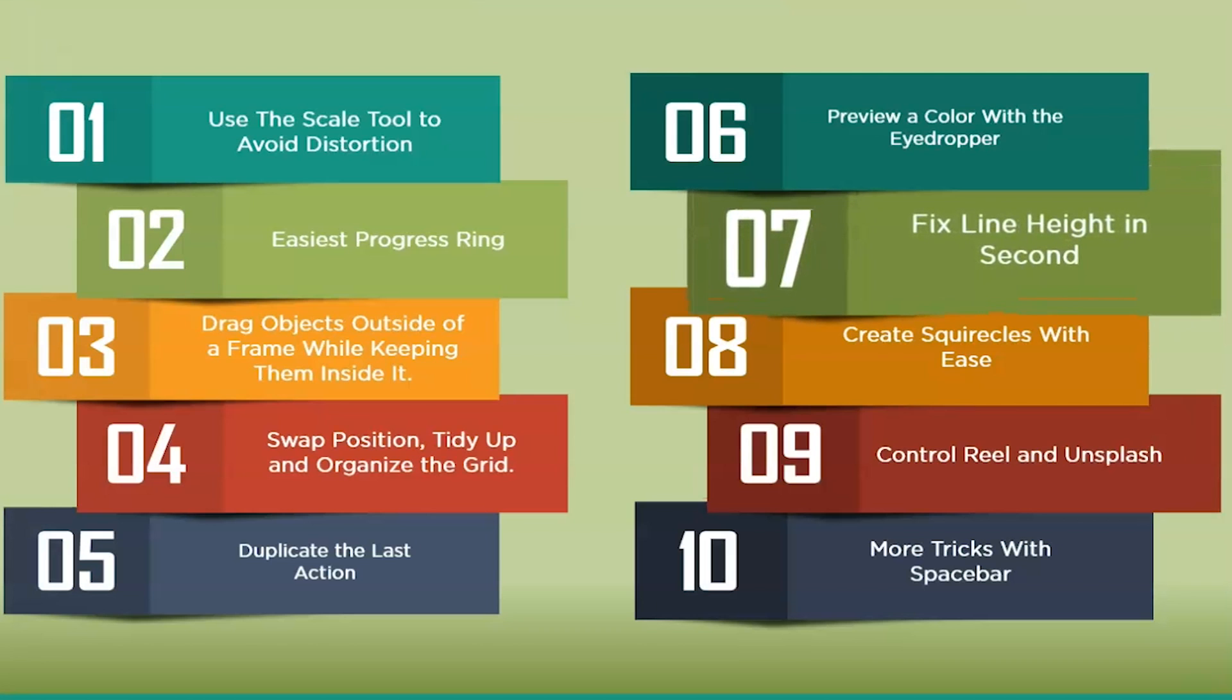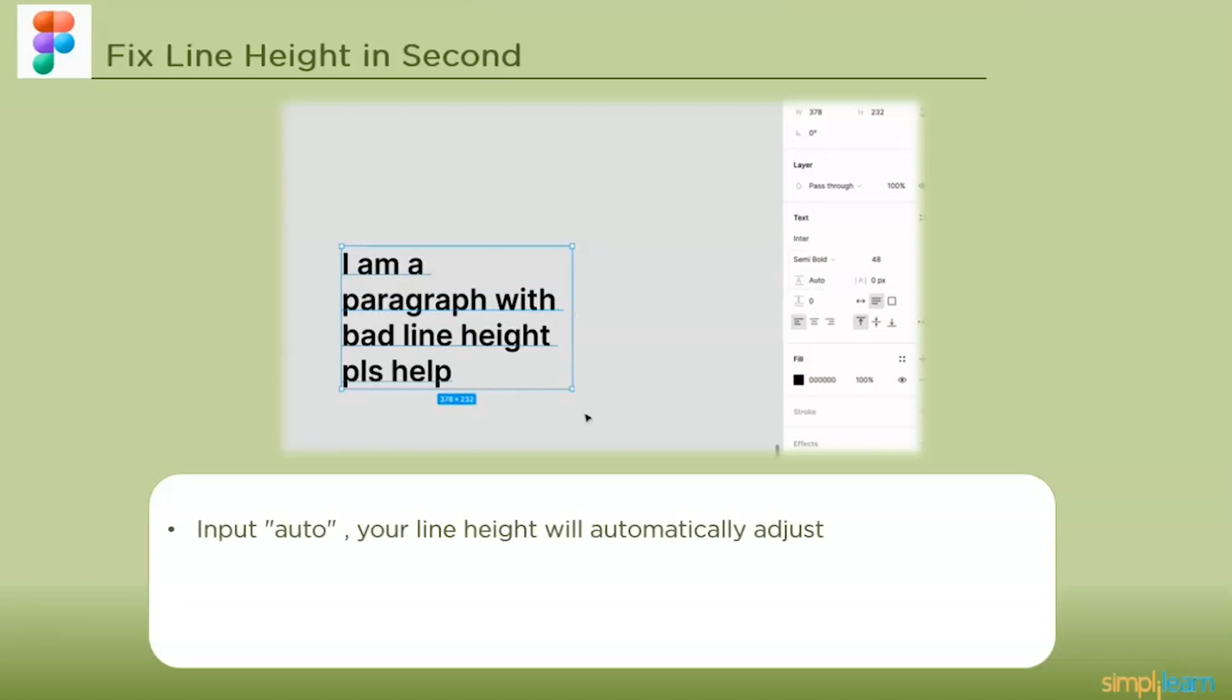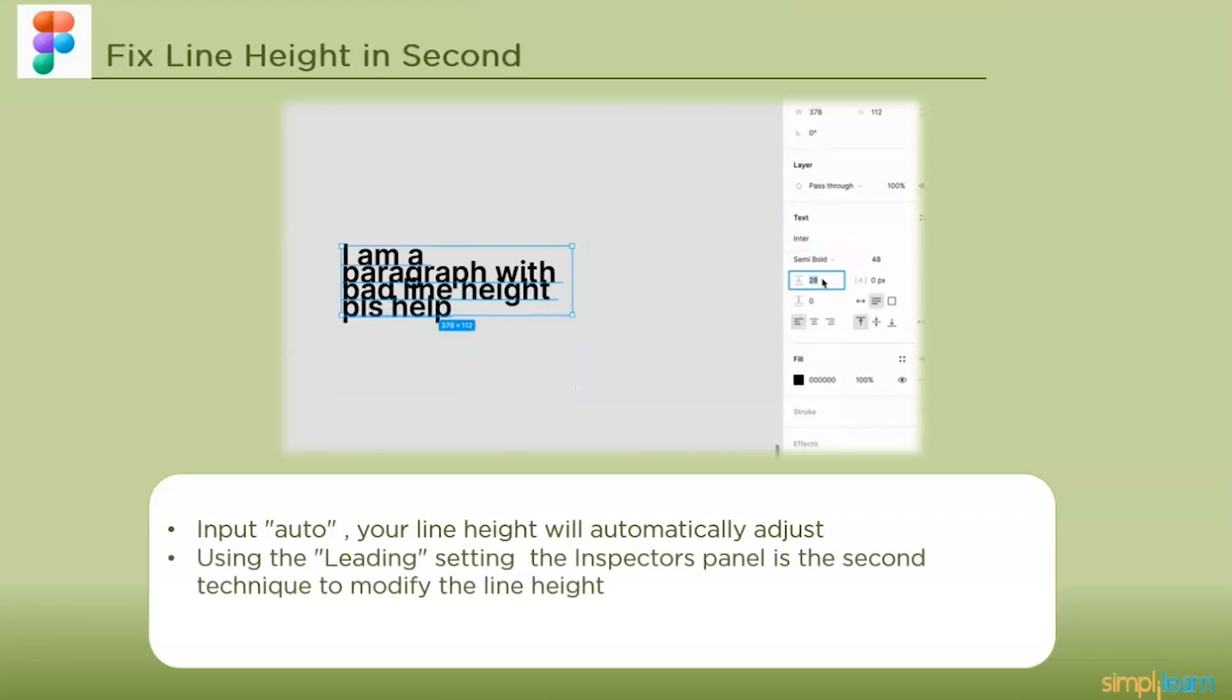The next one is fix line height in seconds. When you input auto or remove the current value from the line height box, your line height automatically adjusts if it appears weird and you don't have a specific value. Using the leading setting in the text section of the inspector's panel is a second technique to modify the line height in Figma. You may enter a number or a percentage to specify the distance between the lines of text in this option.